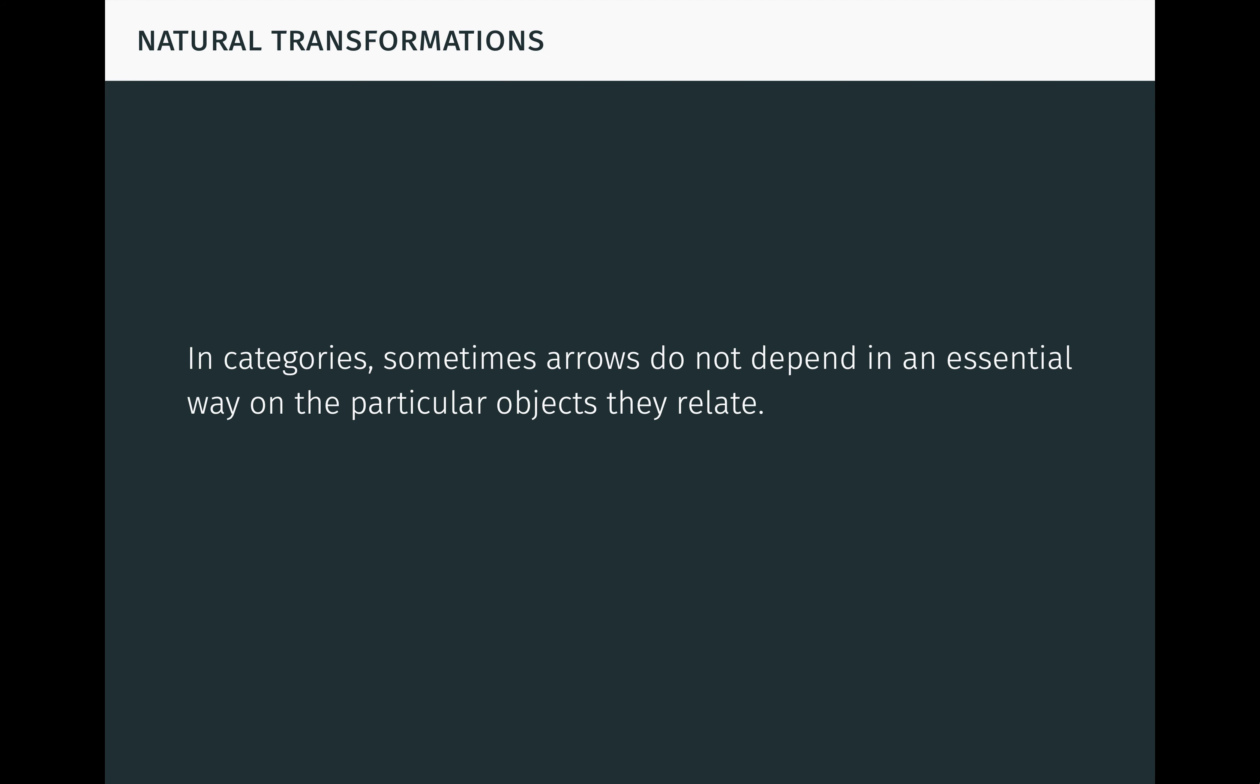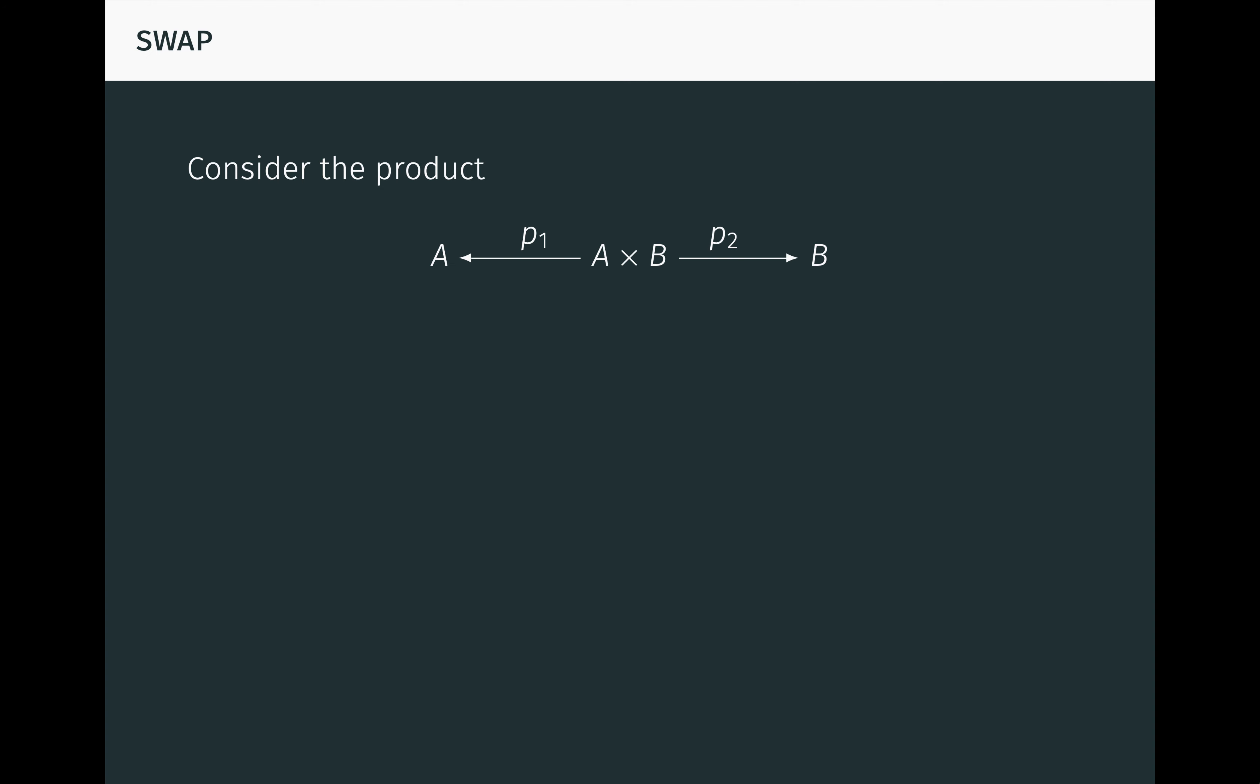In categories, sometimes arrows do not depend in an essential way on the particular objects they relate. Such arrows are called natural. As an example, consider the product object A times B with projection arrows P1 and P2 to A and B, respectively.